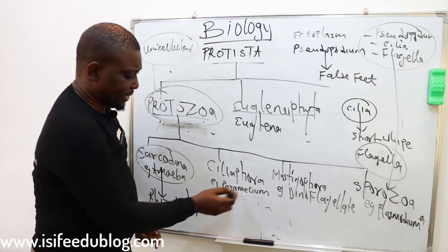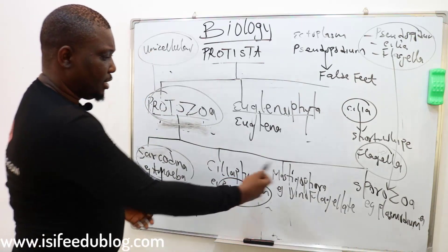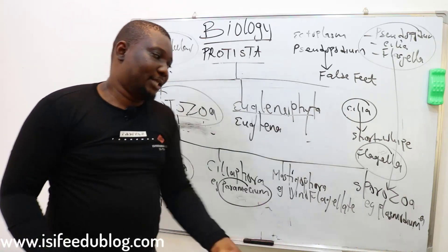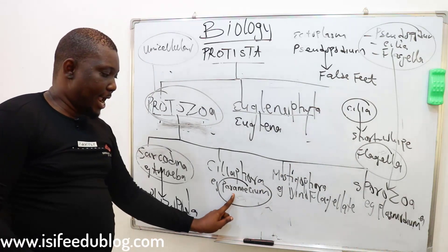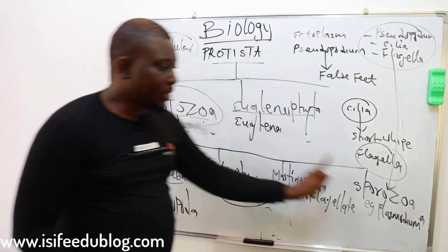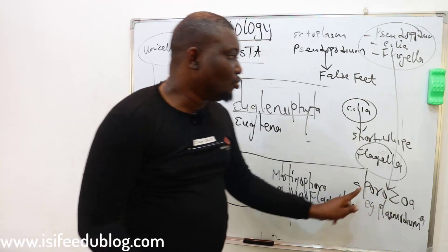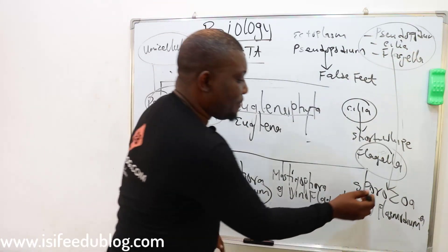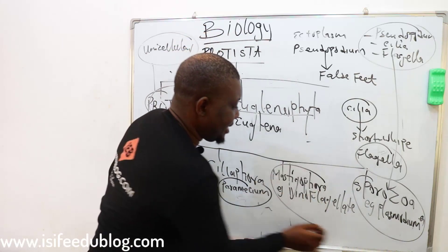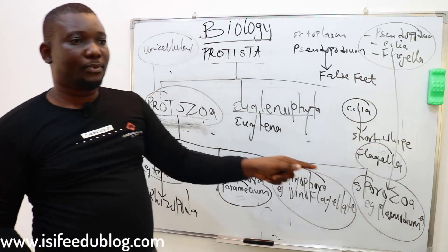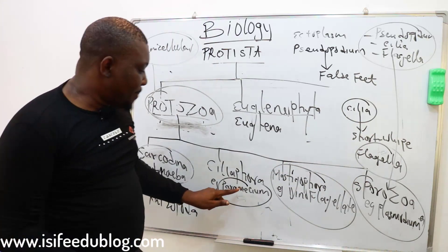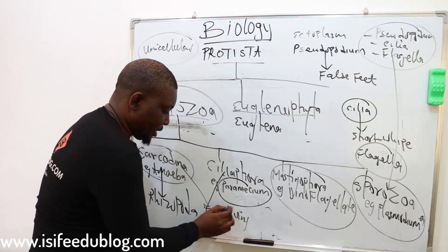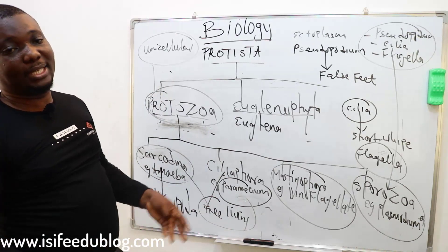Rhizopoda refers to the class of Sarcodina with blunt pseudopodia as the structure for locomotion. An example is Paramecium. Dinoflagellates are the class of protozoa with flagella — they use flagella for locomotion. Cilia aids locomotion in Ciliophora. Pseudopodia aids locomotion in Sarcodina. But in Sporozoa, there is no structure for locomotion — they never possess pseudopodia, cilia, or flagella.